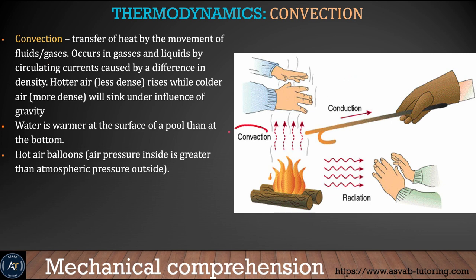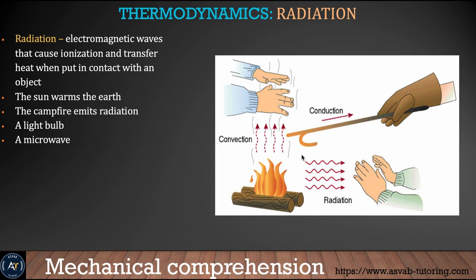Convection is heat transfer by movement of fluid. Radiation is the electromagnetic wave that causes ionization and transfers heat when it contacts an object. We get heat and light from the sun because of radiation. Other examples of radiation include campfires, light bulbs, and microwaves.